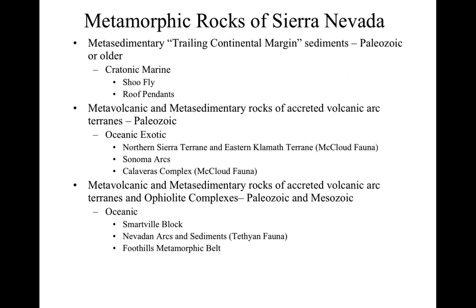This ocean lithosphere has been attached to Northern California in a couple of places — it's called the Smartville block. McPhee talks about the Smartville block in quite a bit of detail. It represents oceanic lithosphere, perhaps in a basin between the Nevadan island arcs forming offshore, and it's also going to form the foothills metamorphic belt.